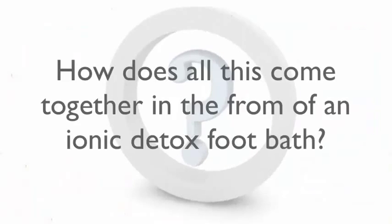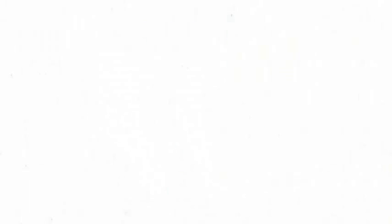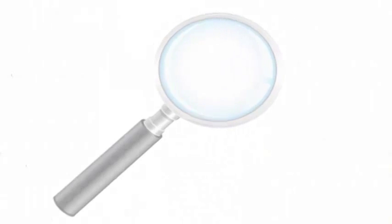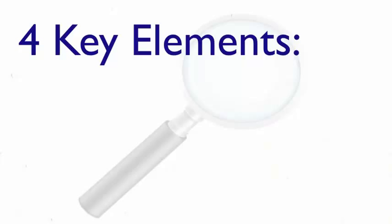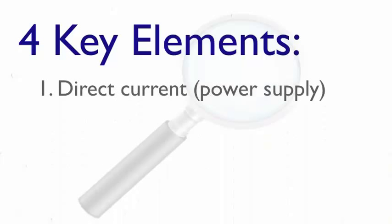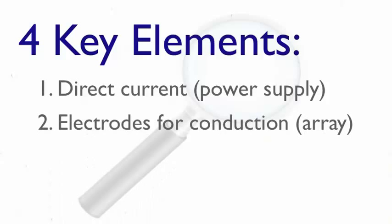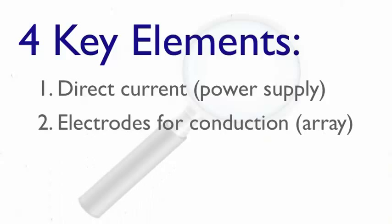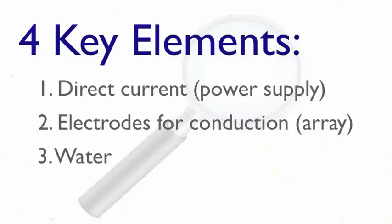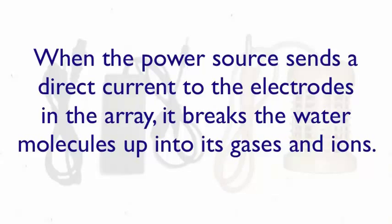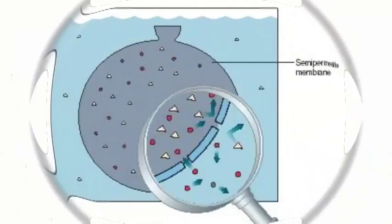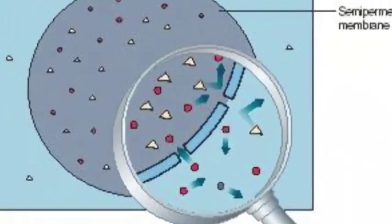So how does all this come together in the form of an ionic detox foot bath? Let's take a look. There are four key elements needed to make it all happen: a direct current from an electrical source, the power supply; electrodes to conduct the current, the array; water; and a tub or basin to put the water and array into. When the power source sends a direct current to the electrodes in the array, it breaks the water molecules up into its gases and ions. These ions are now in the water creating a higher concentration.